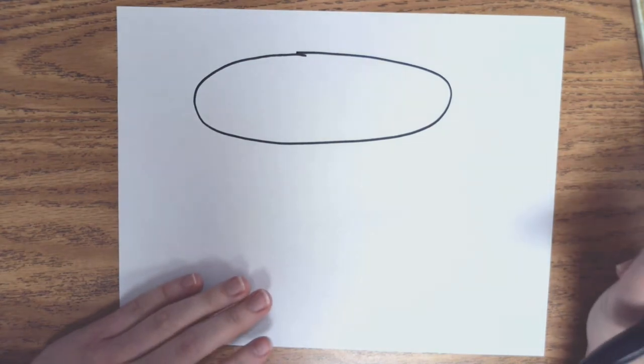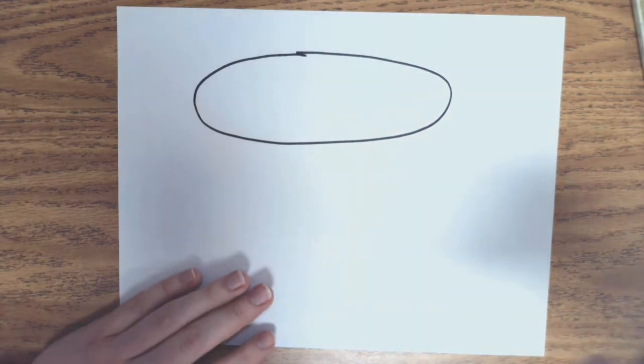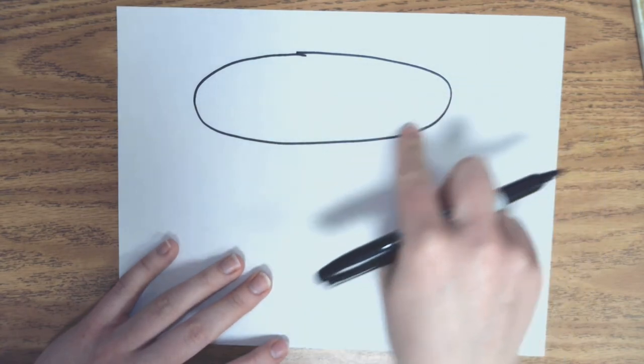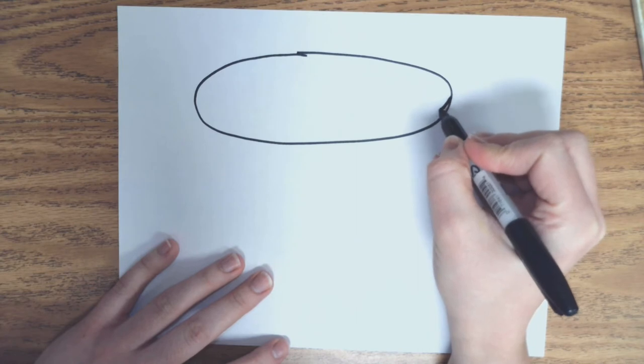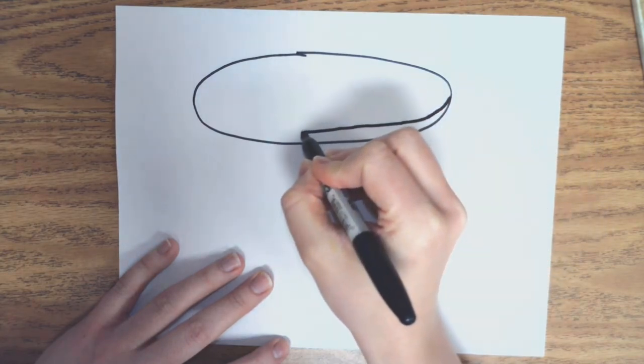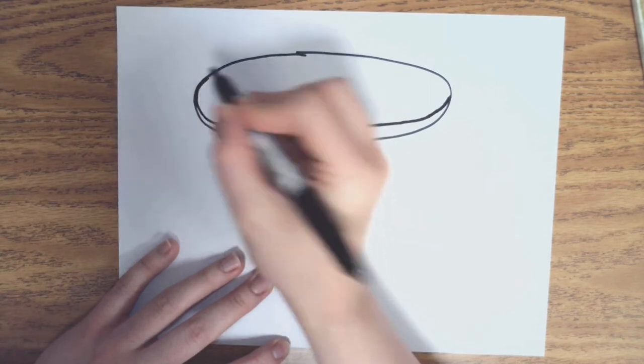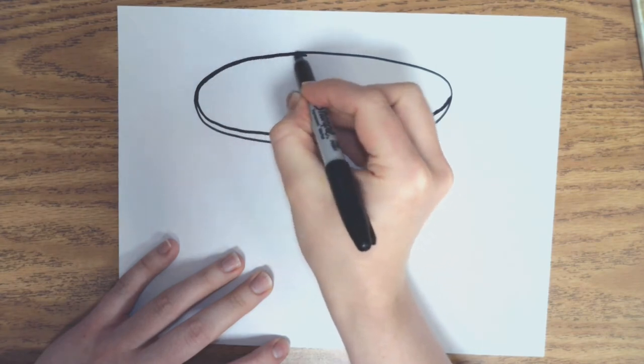Then we're going to do the rim of the hoop. So the rim is going to be thicker in some areas and thinner in others. Right here in the inside at the bottom, we're going to draw the first part. We're going to start at the edge, and as we come out, we get a little thicker and we start getting thin again, until we disappear into the line.